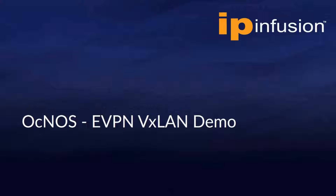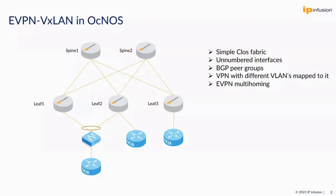Hello everyone, welcome. In this video we will see EVPN VXLAN functionality in Ognos. The topology contains a simple Clos fabric with unnumbered interfaces and BGP peer groups. We will also see VPN formed with multiple different VLANs mapped to it and we will see EVPN multi-homing functionality in this demo.